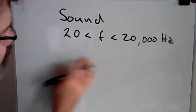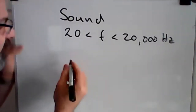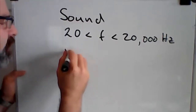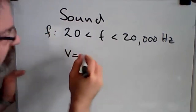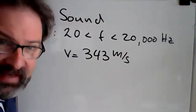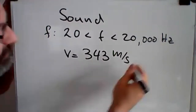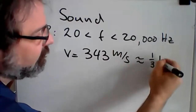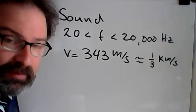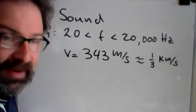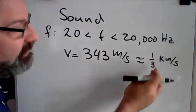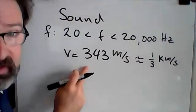We also talked about the speed of sound. The speed is about 343 meters per second. The ballpark idea is that this is about a third of a kilometer per second, so if you hear thunder and count the seconds, you divide by three and you know how many kilometers away the lightning struck.